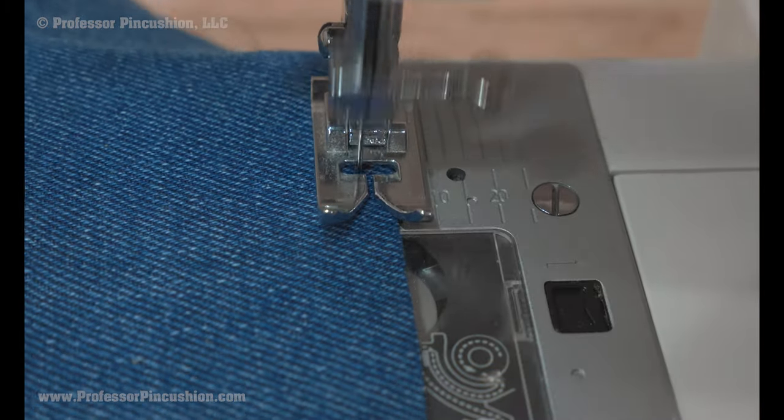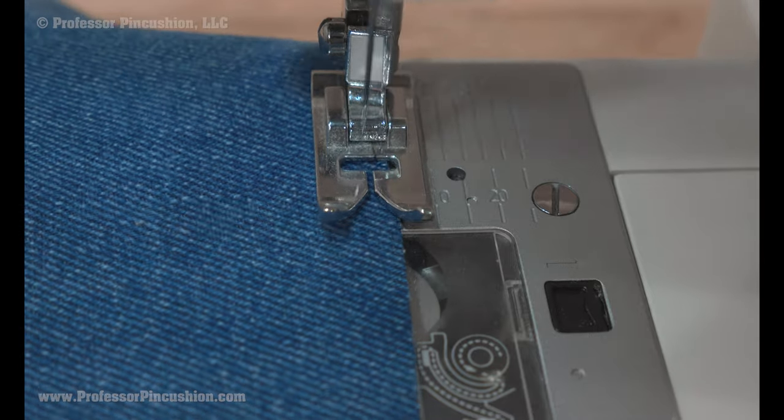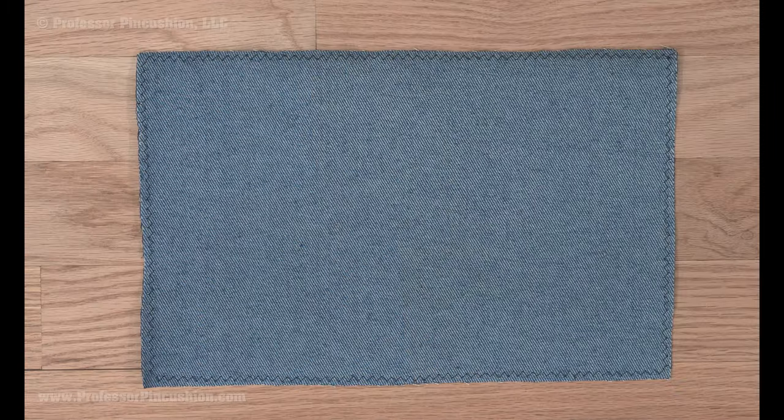Because denim frays a lot, you may consider doing a zigzag stitch or overcast to finish all the raw edges before starting construction to minimize fraying.